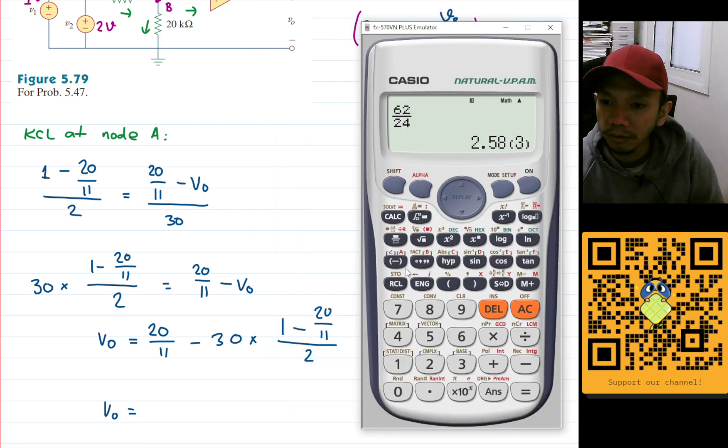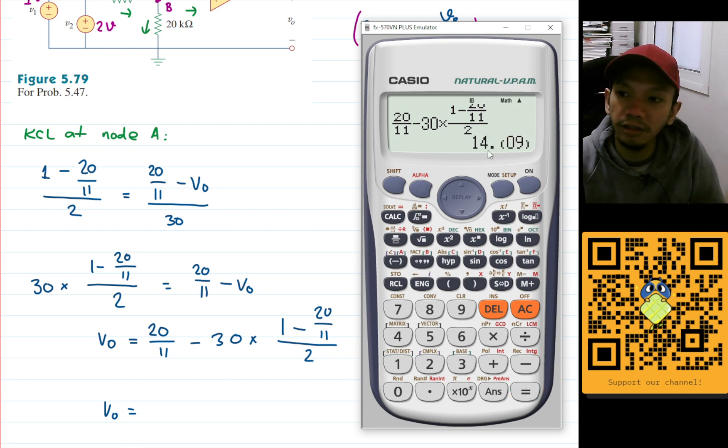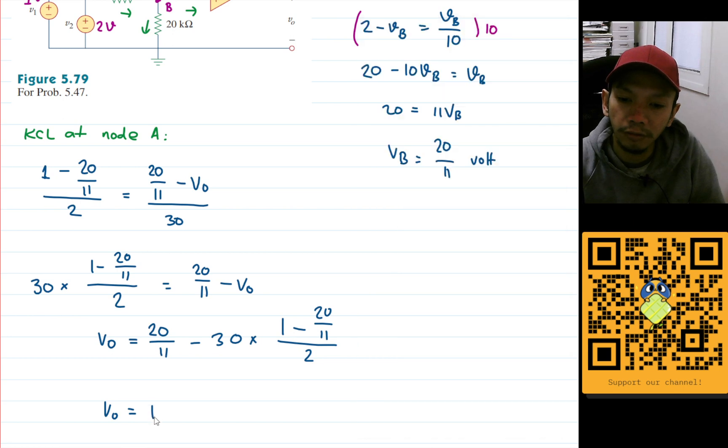Yeah, this is all numbers so we can just use a calculator here. So we'll have 20 over 11 minus 30 multiplied by 1 minus 20 over 11 divided by 2. And I will have 14.09, and the unit will be volt.